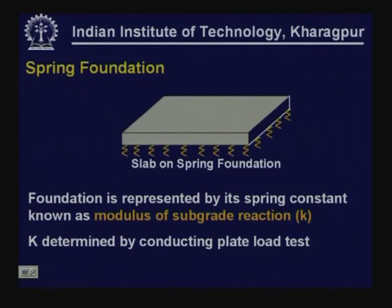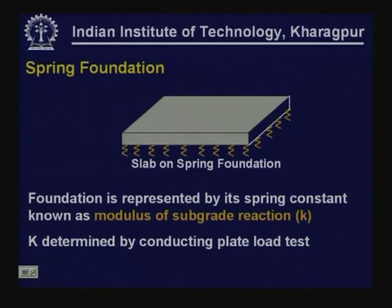Spring foundation is the most common assumption that we make about the foundation of concrete pavements. In this, the foundation is represented by its spring constant known as modulus of subgrade reaction K. K is normally determined from a field test by conducting a plate load test on the foundation. There is a parameter that we normally use to represent the relative stiffness of the slab and the subgrade — we use the term called radius of relative stiffness.